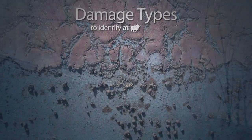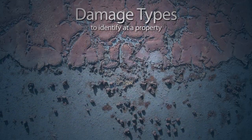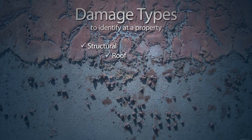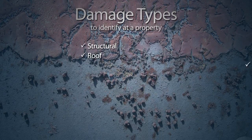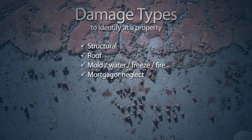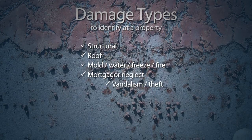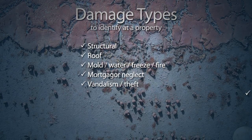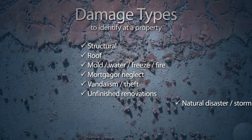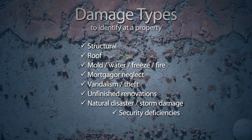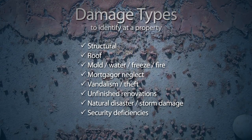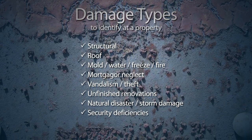There are multiple damage types that you may come across at a property, including structural, roof, mold, water, freeze, fire, mortgage and neglect, vandalism or theft, unfinished renovations, natural disaster, storm damage, and security deficiencies. Let's take a detailed look at each.